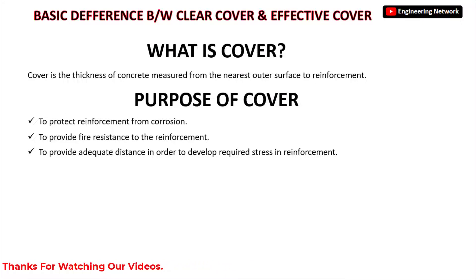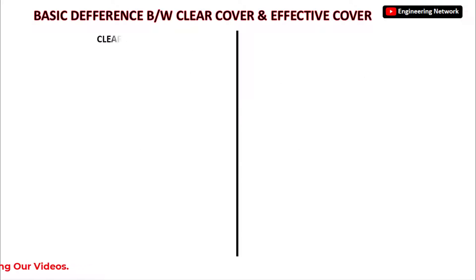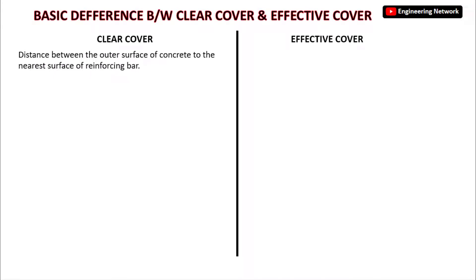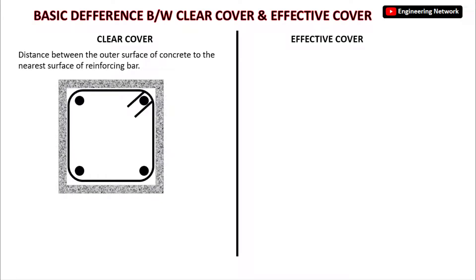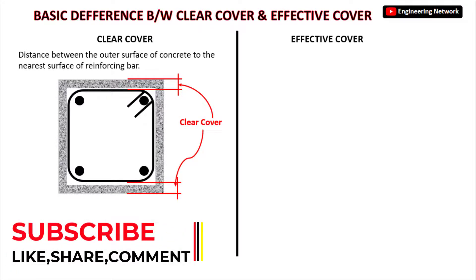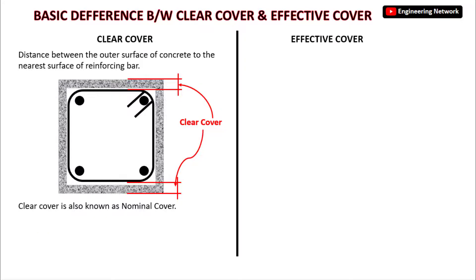Now let's talk about the basic difference between clear cover. The clear cover is the distance between the outer surface of concrete to the nearest surface of the reinforcing bar. If we have a beam cross section, the clear cover will be the distance from the outer surface or outer edge of the beam cross section to the nearest surface of the reinforcement bar. Sometimes clear cover is also known as nominal cover.